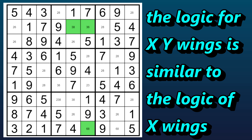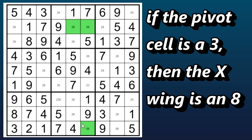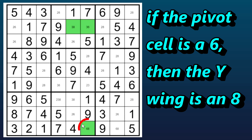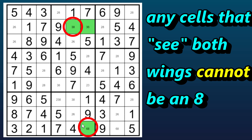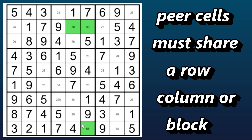So now what? The logic is similar to the logic we use with X-wings and even with swordfishes. This pivot cell must be either a three or a six. If it's a three, then this cell is an eight, but if it's a six, then this cell is an eight. Either way, whether this cell is a three or a six, one of the wings has to be an eight. So if one of these wing cells is an eight, then any cell that sees both cells cannot be an eight. Cells that see each other are also called peer cells because they share a common row, column, or block.